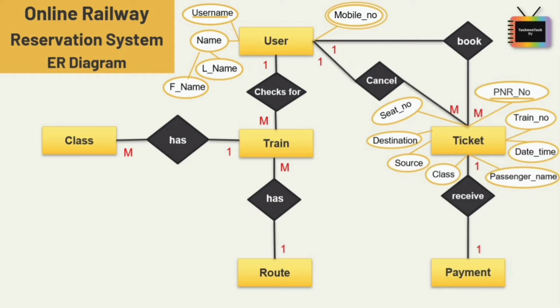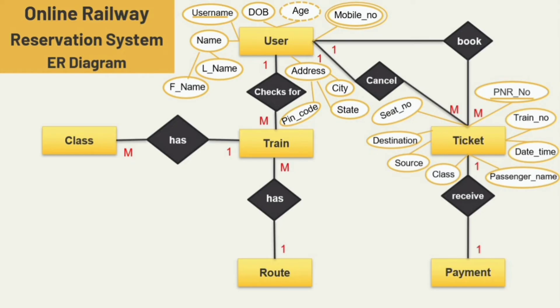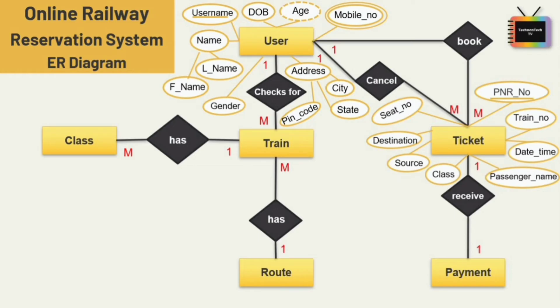The name attribute is broken down into two sub-attributes: first name and last name. Mobile number is a multi-valued attribute because one user can have various contact numbers. Date of birth is the next attribute, and user age is a derived attribute since it changes over time and can be derived from date of birth. Address is a composite attribute composed of other attributes such as pin code, state, city, etc.